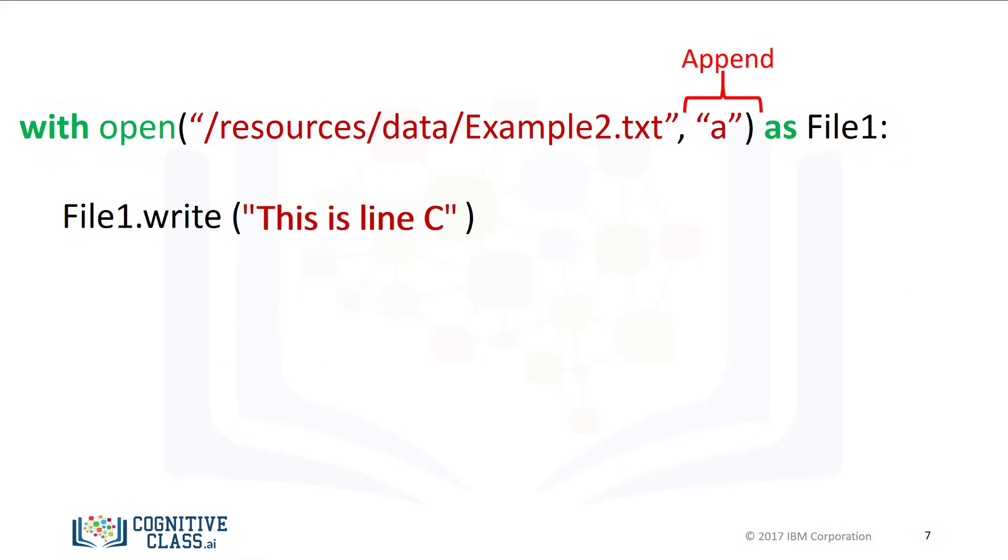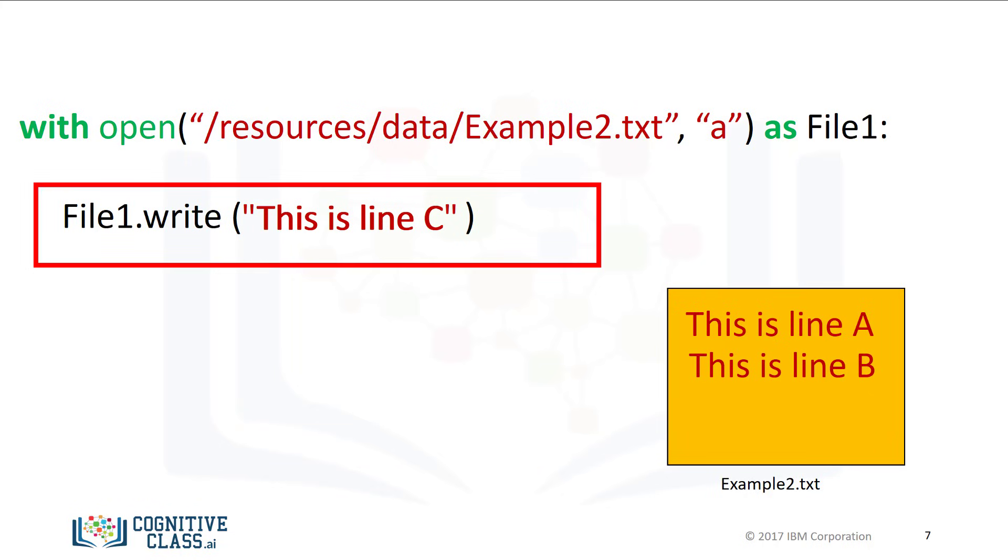We can set the mode to append using a lowercase a. This will not create a new file, but just use the existing file. If we call the method write, it will just write to the existing file, then add 'this is line C', then close the file.